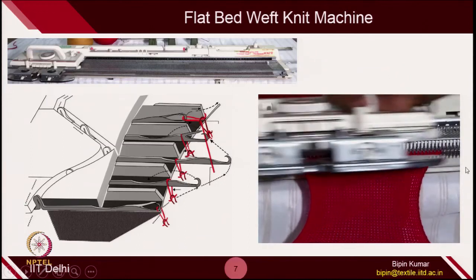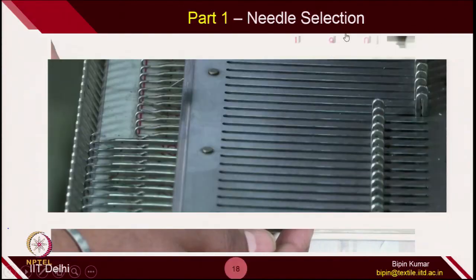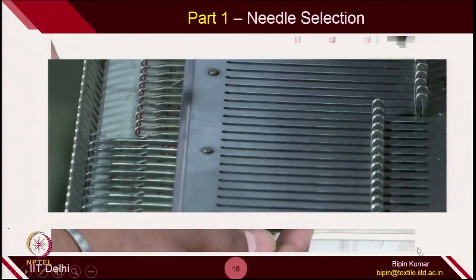The first thing before we start operating on the machine, we have to identify how much width of fabric we want to create. Naturally, the first thing we want to do is needle selection. Our bed width can be more than 1 meter or 2 meters depending on the production capacity. So the first thing we want to do is select how many needles we actually want to operate on the machine.